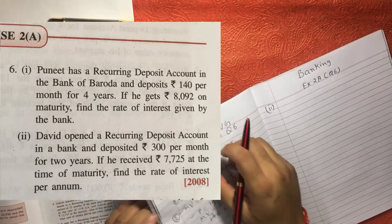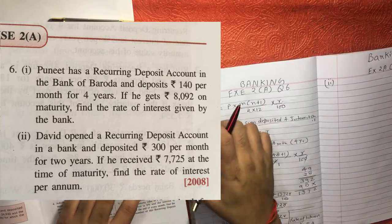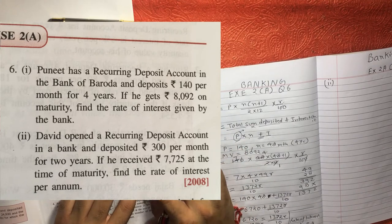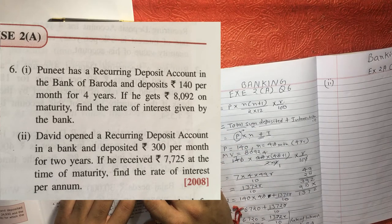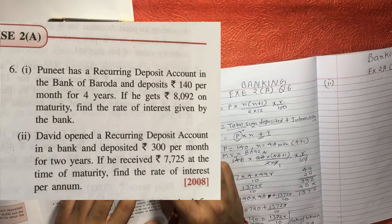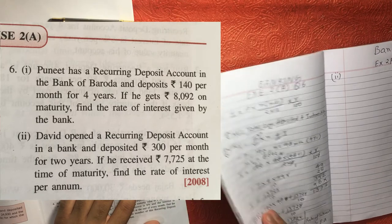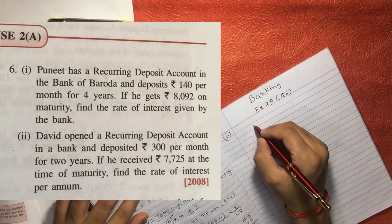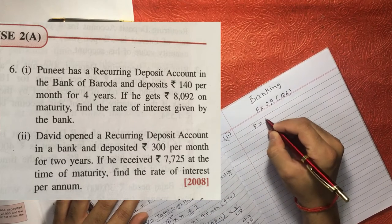Now the question is saying David opened a recurring deposit account in a bank and deposited rupees 300 per month. So now it is very easy. 300 per month is what? P. P is what? 300.